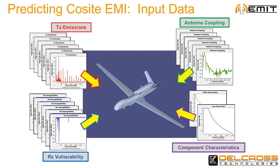Any of these system components may start with simple parametric models and later be refined at any time with data of higher fidelity. Because of EMIT's multi-fidelity data approach, RF COSITE EMI analysis can start with the beginning of your vehicle or platform development cycle, before specific radios or components have been selected or measured.